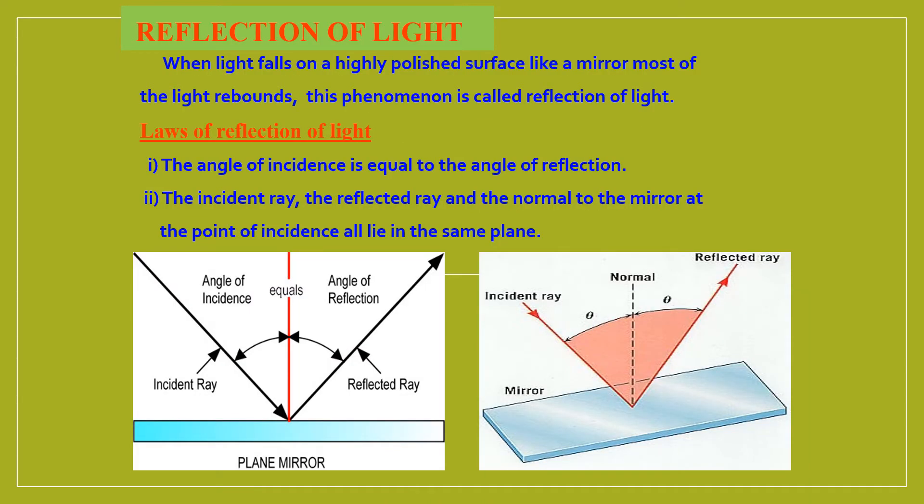Let us look into what we studied in class 8. What is reflection of light? When light falls on a polished surface - it could be a mirror, steel plate, or spoon - any of these polished surfaces, most of the light rebounds. This phenomenon is called reflection of light. What are the laws of reflection?